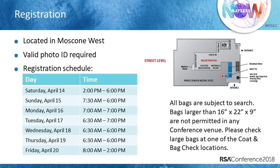Just a word about registration: there is just one location this year, in Moscone West. We require you to bring a valid photo ID when you check in. Registration opens at about 2 o'clock on Saturday. It does get really busy, particularly on Monday and Tuesday mornings. So if you're in town over the weekend, I advise you to go in, register, pick up your badge, and avoid the crowds. Also, bags larger than 16 by 22 by 9 inches aren't permitted in any of our conference venues, but we do have a coat check by registration.